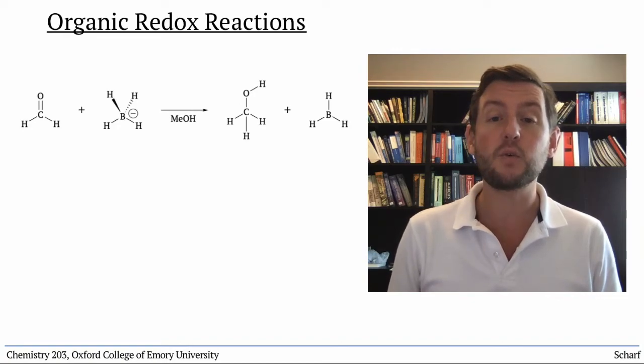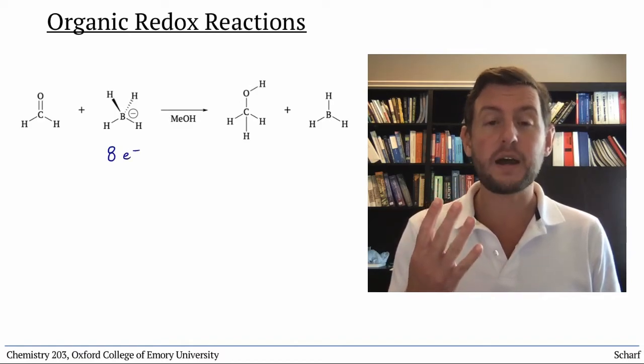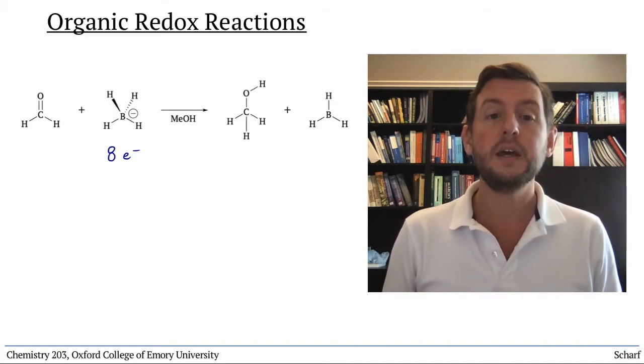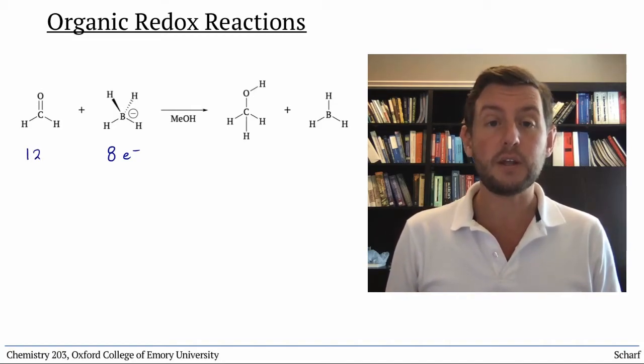Borohydride, BH4-, has a total of 8 valence electrons: 3 from boron, 4 from the hydrogen atoms, and an extra 1 for the charge. And formaldehyde has 12 total electrons: 4 from carbon, 6 from oxygen, and 2 from the hydrogens.